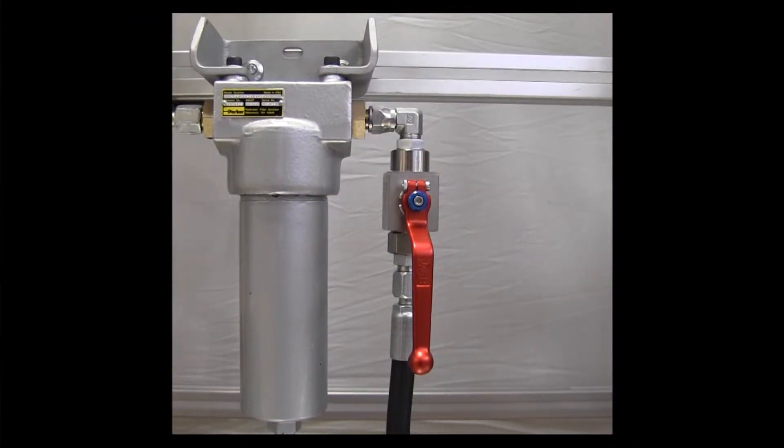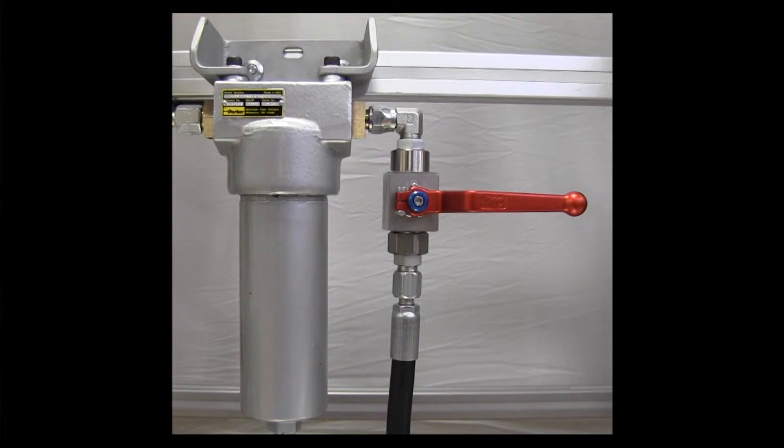At the stabilizer unit, close the hydraulic isolation valve, typically located at the pressure filter or stabilizer manifold.